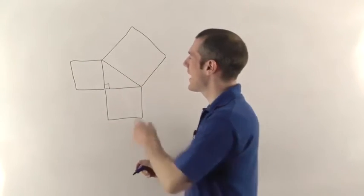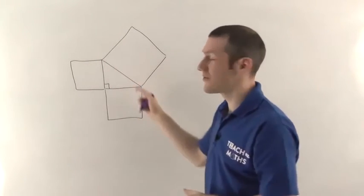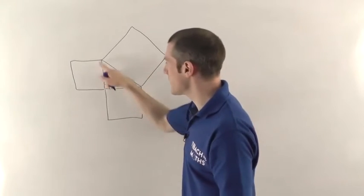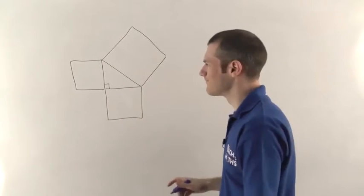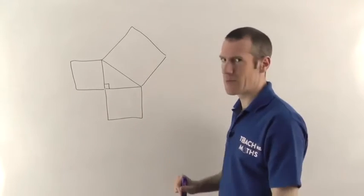Pythagoras' theorem allows you to work out the length of the slope or sometimes if you know the length of the slope you can work backwards to find the length of one of the vertical or horizontal sides on the triangle. How can you do that? Let me explain.